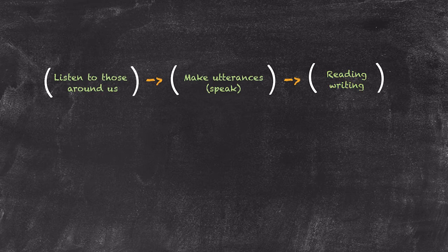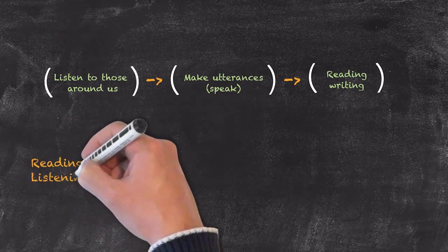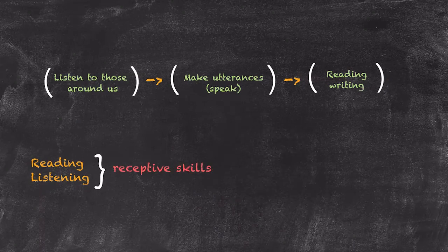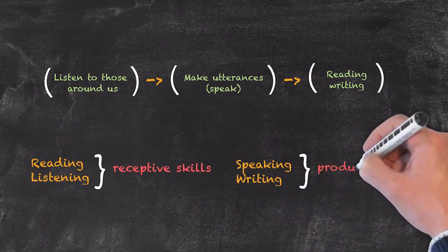If we group those skills into their different types, then the two skills of reading and listening are known as receptive skills, whereas the skills of speaking and writing are known as productive skills.